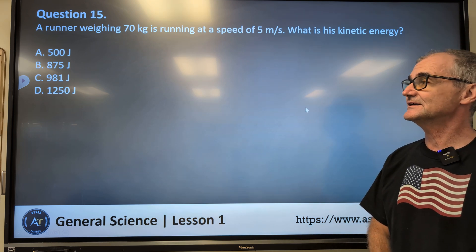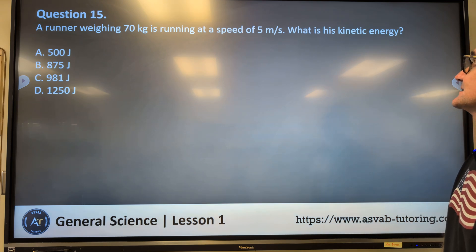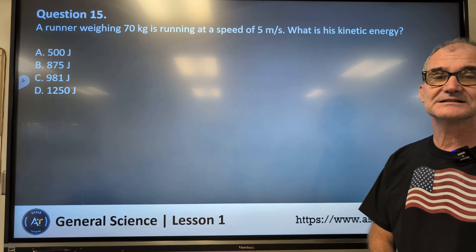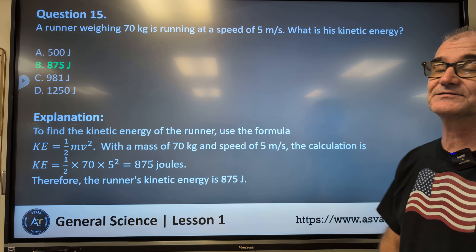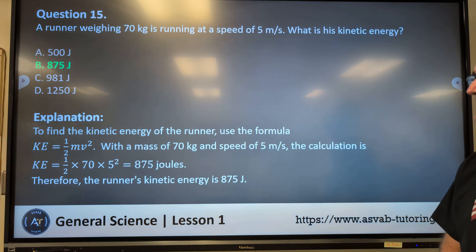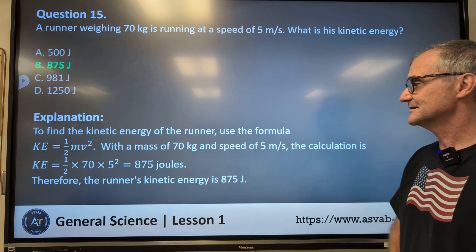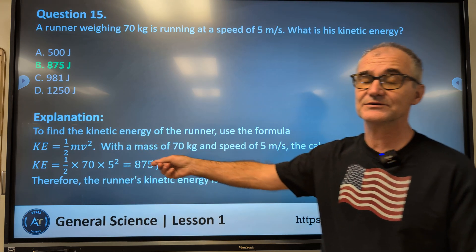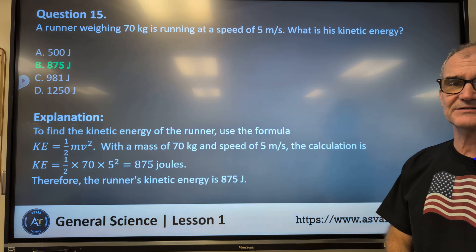Question number 15. A runner weighing 70 kilograms is running at a speed of 5 meters per second. What is his kinetic energy? 500, B, 875, C, 981, D, 1250. Pause the video, figure it out. Unpause. Correct answer to 15 is 875. To find the kinetic energy, use the formula kinetic energy is equal to one-half mass times velocity squared. That 70 goes in for the mass, the speed of 5 meters per second goes in for velocity, velocity squared, order of operations, 25 first. The square first, 25 times the 70 times a half to get 875 joules.